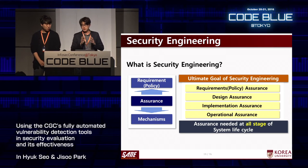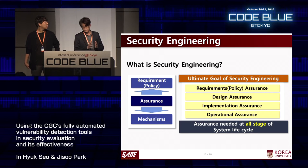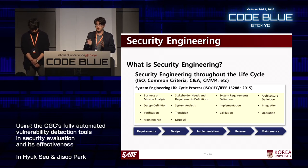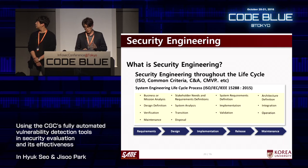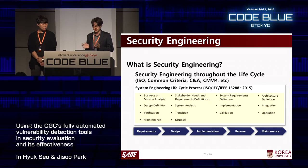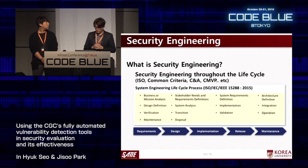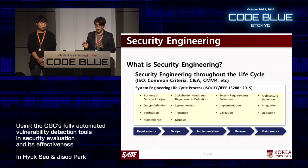For achieving information assurance, assurance must be considered in each phase of the system's life cycle — that is, policy assurance, design assurance, implementation assurance, and operational assurance are all needed. Security engineering can be applied to the whole system life cycle, and standards such as ISO, Common Criteria, CMVP, and CNA provide detailed descriptions for this. The process can be simplified into five phases: requirements, design, implementation, release, and maintenance.